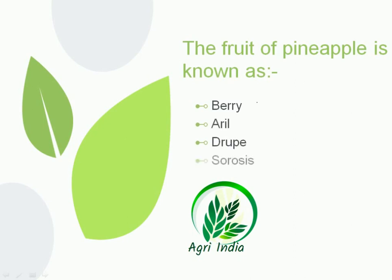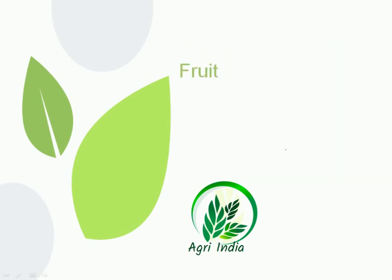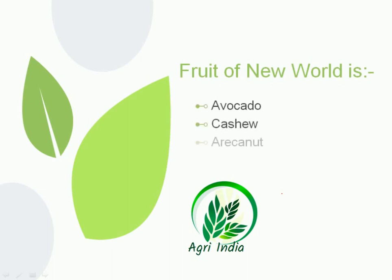Next question: the fruit of pineapple is known as — options are berry, aryl, drupe, or sorosis. The fruit type of grape is berry; pomegranate is aryl; mango is drupe; and the fruit type of pineapple is sorosis. The correct answer is sorosis.